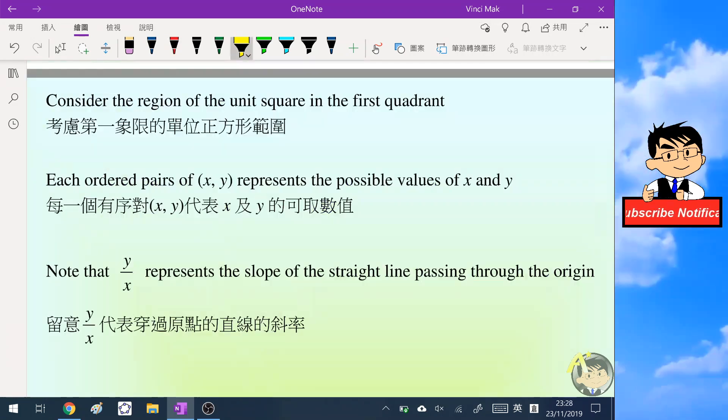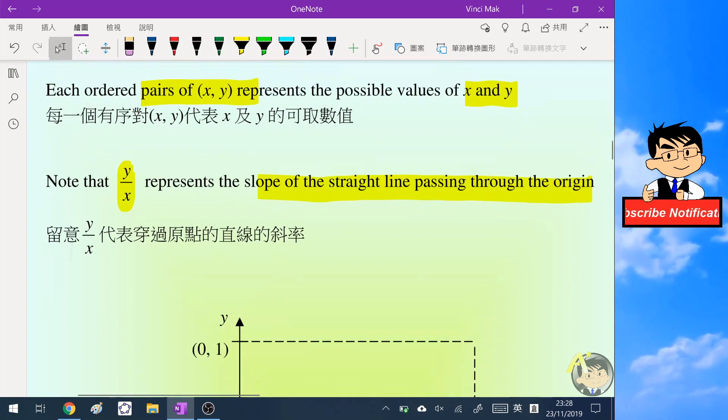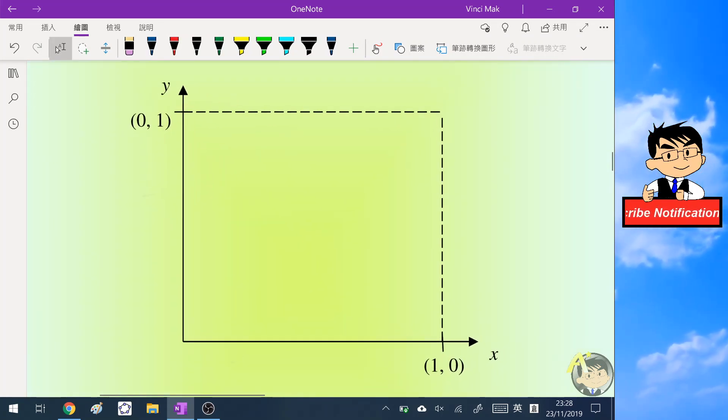We will focus our calculation in the region of the first quadrant because we are picking up two numbers from 0 to 1, and each ordered pair (x, y) represents the possible values of x and y. Notice that y/x represents the slope of the straight line passing through the origin, so we will focus our calculation in this unit square.